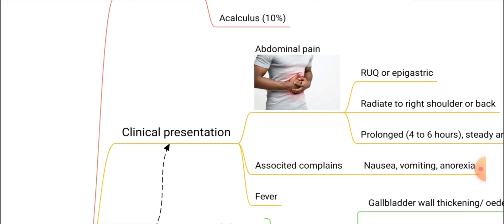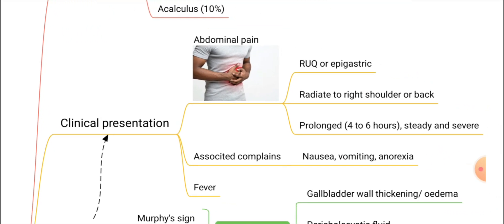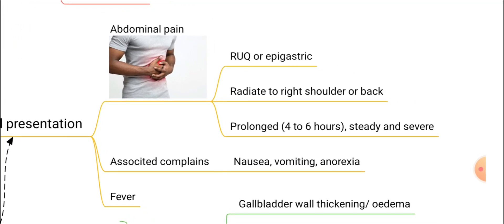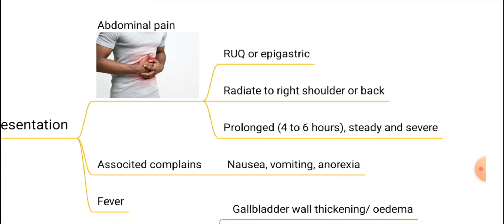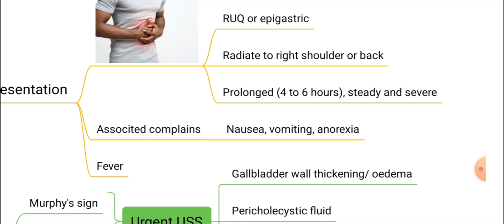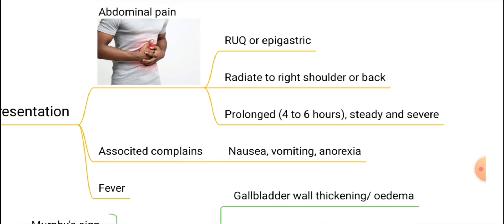What are the clinical features of acute cholecystitis? The patient has abdominal pain in the right hypochondriac or right upper quadrant region, or it may be in the epigastric region as well. This pain radiates to the right shoulder or back. The patient has severe, steady, persistent pain lasting about four to six hours, and may also have nausea, vomiting, anorexia, and fever.